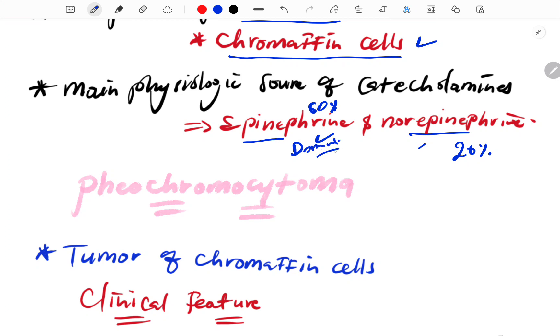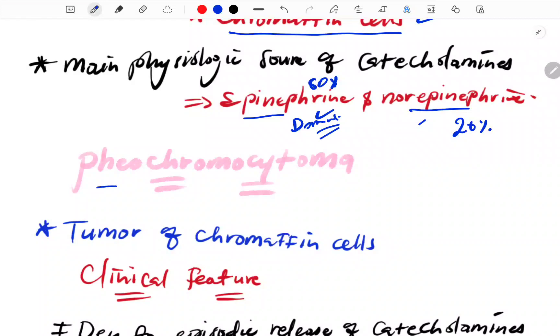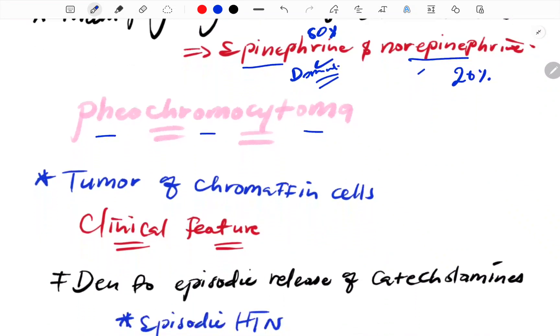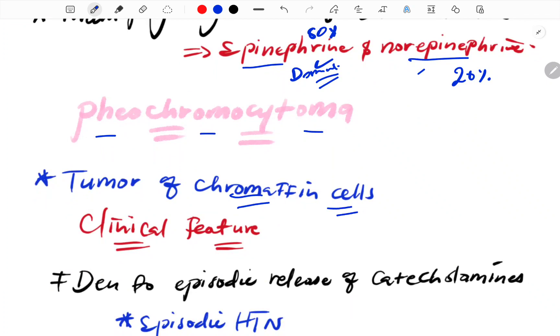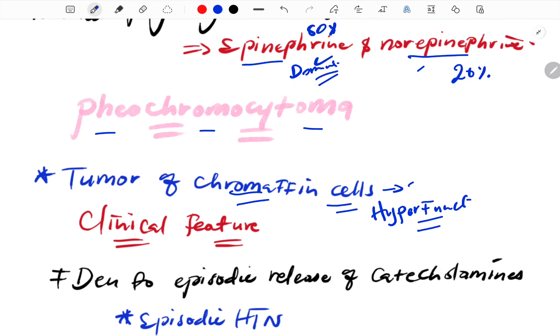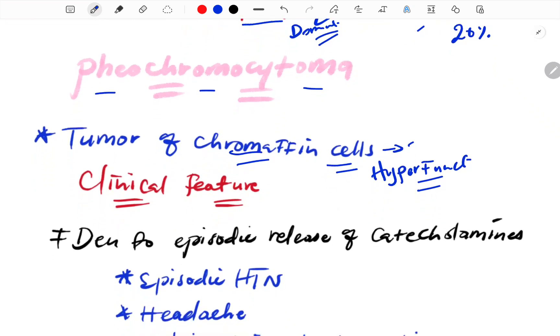The tumor of chromaffin cells is called pheochromocytoma. This is a hyperfunctioning tumor. The clinical feature is that this is a hyperfunctioning tumor of chromaffin cells.